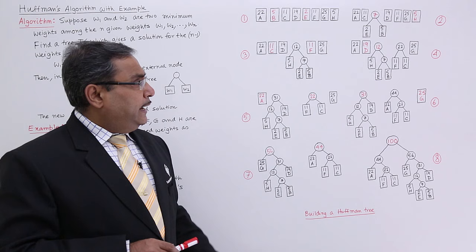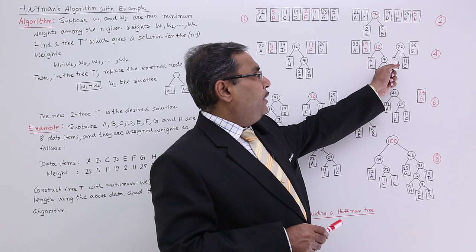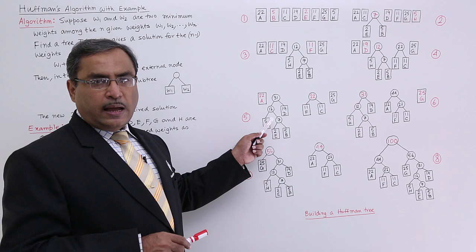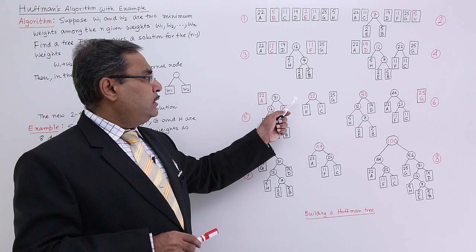Out of this 22, 19, 12, 22 and 25, 19 and 12 are the minimum. So I am forming this 31, adding W1 plus W2 and this and others have got the respective subtrees. So 22, 31, 22 and 25, out of them 2 22s, these two values are minimum. So I am forming this 44 and this particular tree.